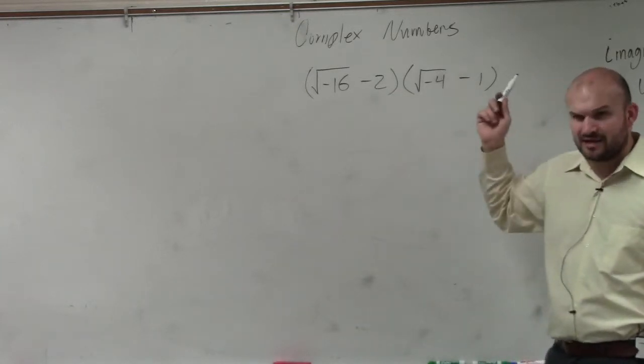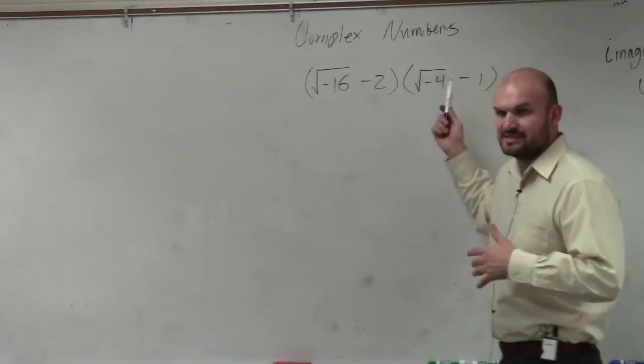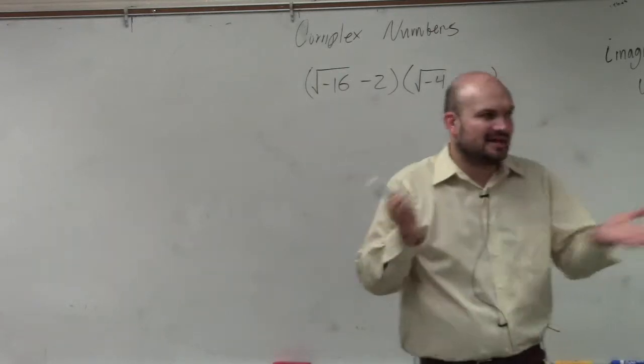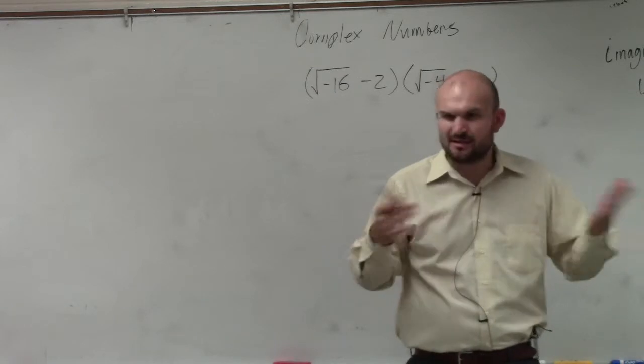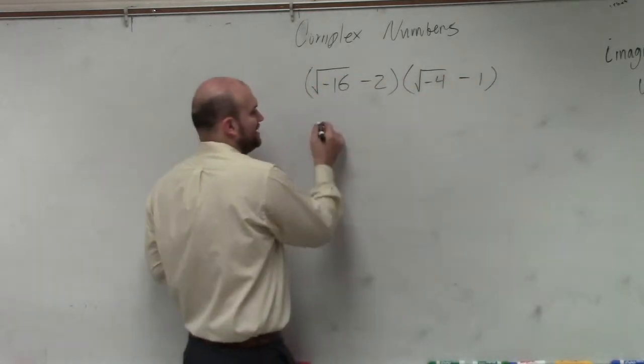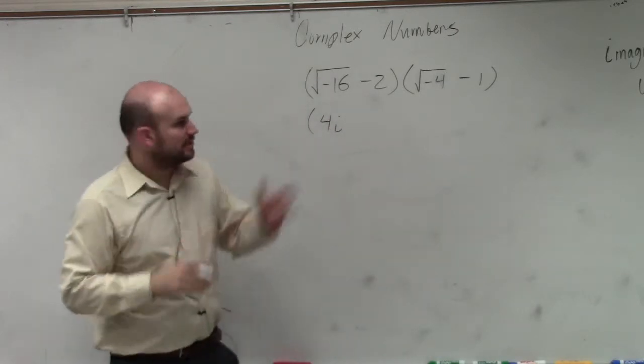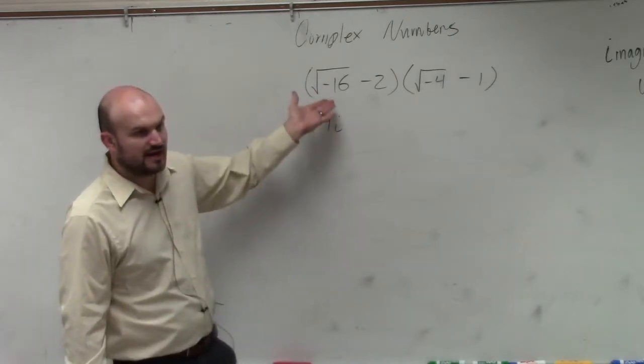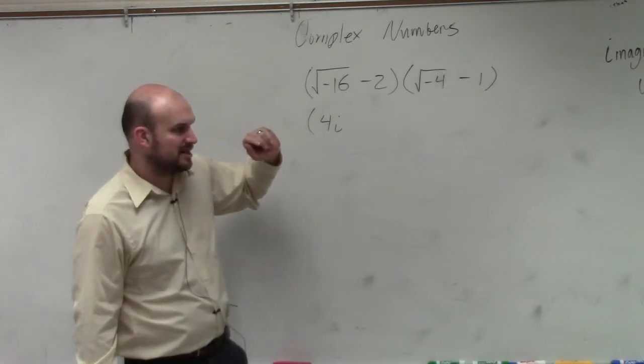You can do everything with radicals. That's fine. But if you rewrite these negatives using i, then it's kind of like multiplying polynomials again, which I think is a little bit easier for a lot of you guys to visualize. So would you guys agree with me that this is 4i? Square root of 16 is 4, square root of negative 1 is i. I'm just not breaking apart because I'm trying to move on a little bit.